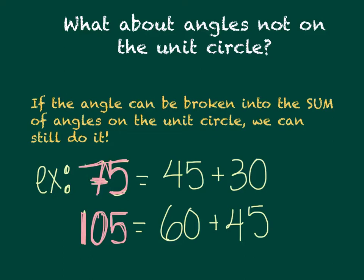30, 45, 60, 90, 120, 135, etc. But what about the angles that we haven't looked at? Can we still find an exact value for their sine or their cosine? And the answer is we can for specific other angles. And those are the angles that are the sum of angles that we already know on the unit circle.